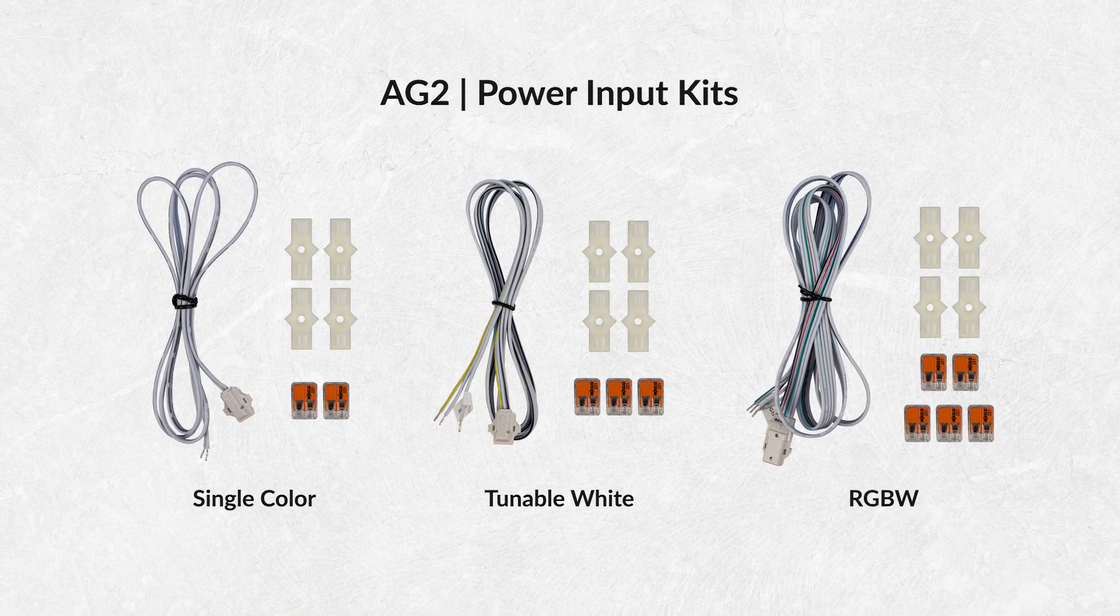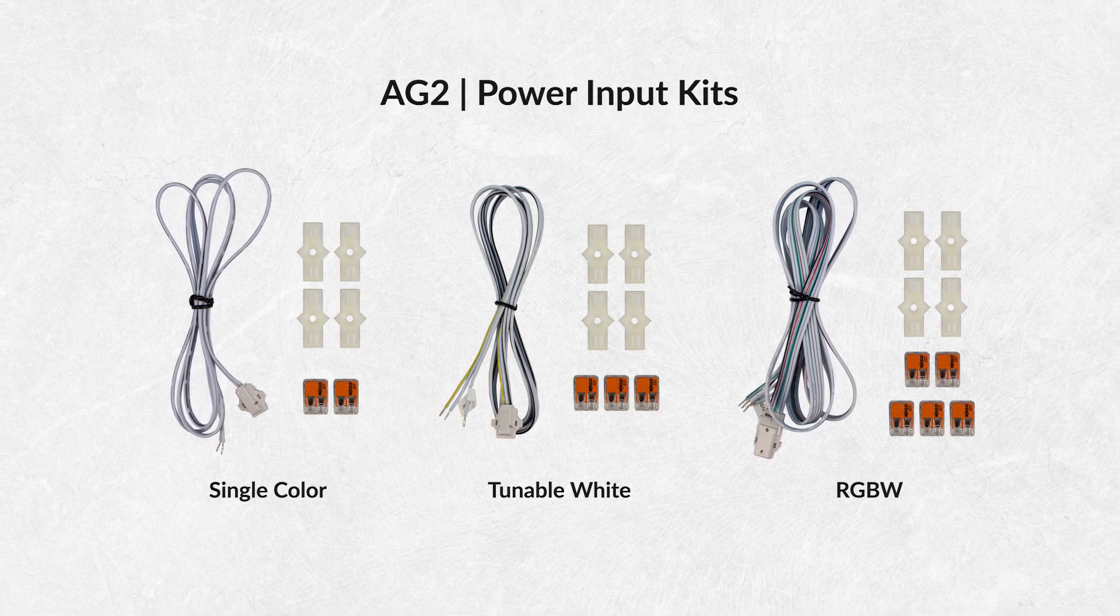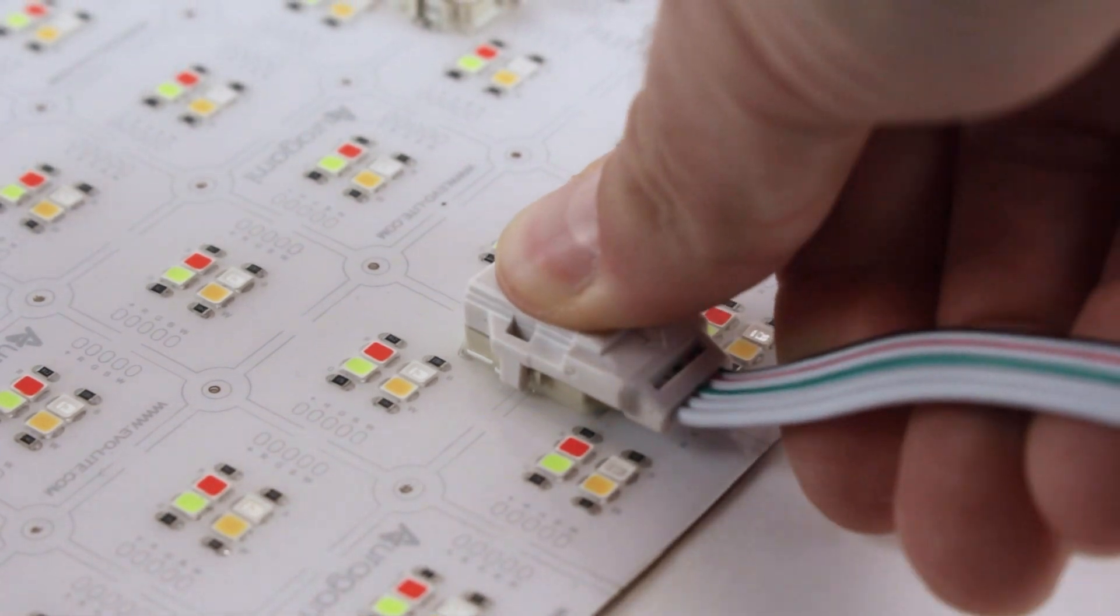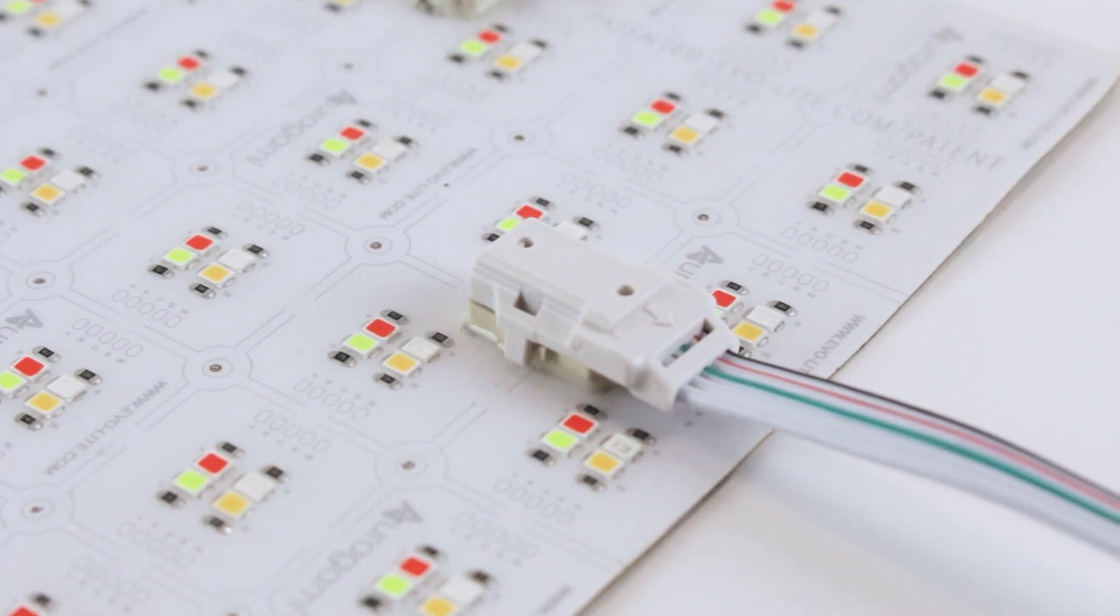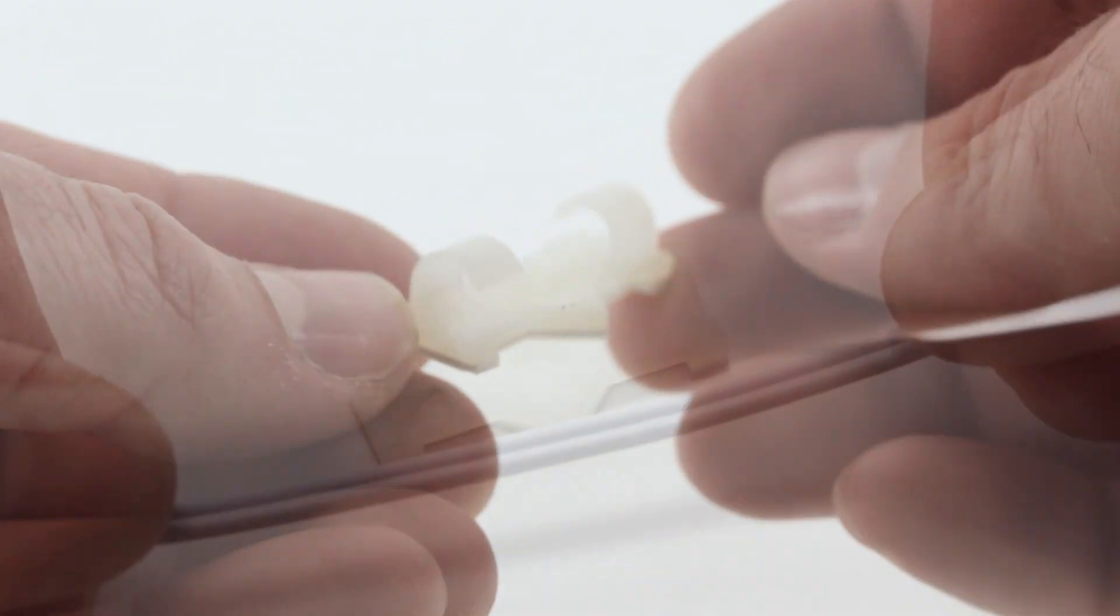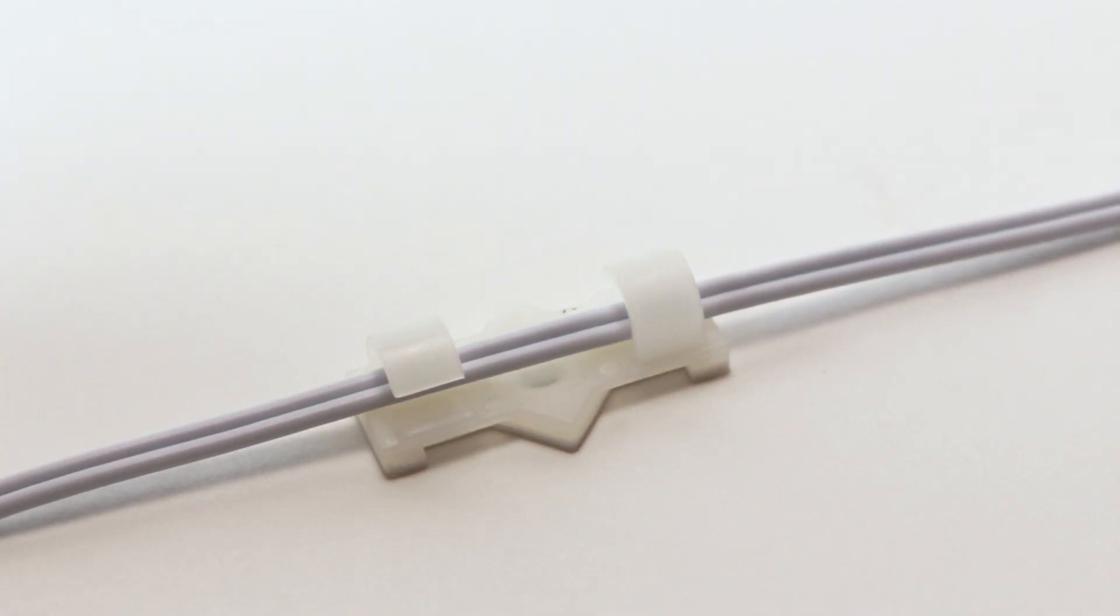Each power input kit, sold separately, will power up to five full lightsheets or 86 watts. Plug the power input cable into the lightsheet terminal the same way as the sheet connectors. Next, route the power input cable so that it will not cover any LEDs and use the included wire management clips to secure it in place.